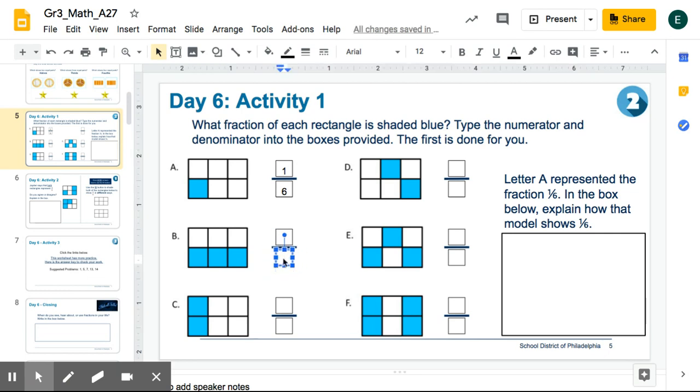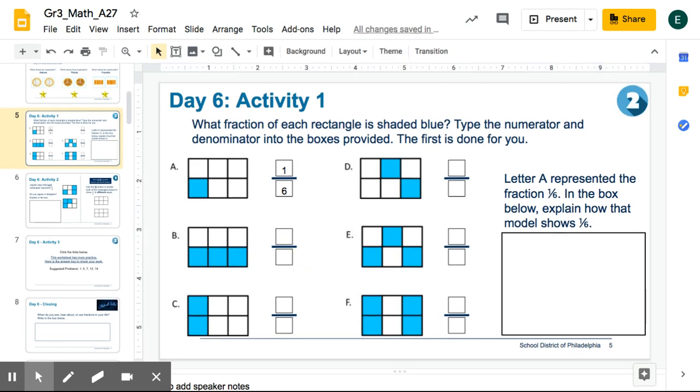Then double click into the box for the denominator and you can type whatever number you think goes in the denominator. Once you've done that, you can move on to the next one.